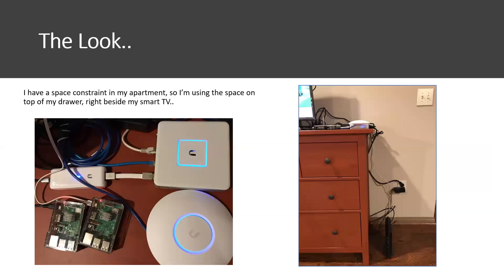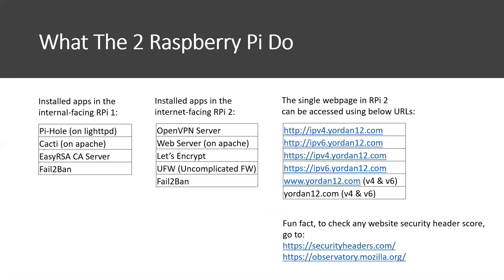As you can see, I have space constraints in my apartment. For this project, I'm using just a small space on top of my drawer, right beside my smart TV. The first Raspberry Pi serves a DNS server using Pi-Hole, Cacti for network monitoring, and an EasyRSA certificate server for hosting my HTTPS website. The second Raspberry Pi provides OpenVPN, an Apache 2 web server, Let's Encrypt for my HTTPS website, and a firewall. On both, I use fail2ban and passwordless SSH to access them.